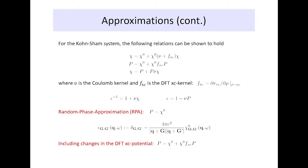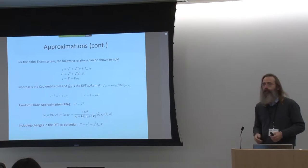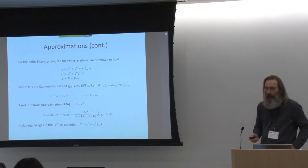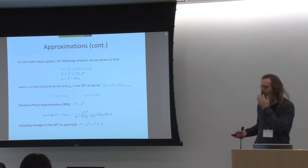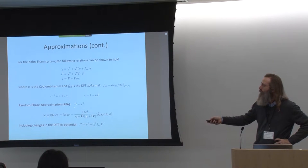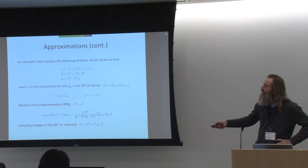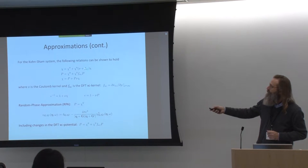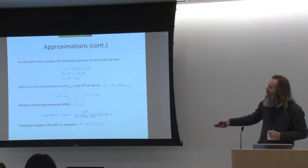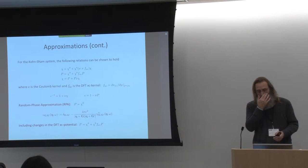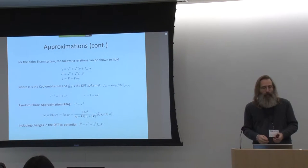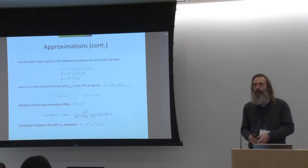The RPA gives us a particular relationship between our microscopic dielectric function and the polarizability computed from our Kohn-Sham system. We can go beyond the random phase approximation and include changes in the exchange-correlation potential — not setting F_xc to zero — and then we get such an equation. That is what we commonly call local field effects in density functional theory, and this is local field effects in the random phase approximation.